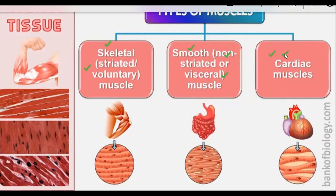Smooth muscles are the involuntary muscles, like the muscles of the eye and pupil. The muscles in our stomach, intestine, and blood vessels are also involuntary muscles. In blood vessels, they control the constriction and relaxation — basically helping to change the diameter of the vessels. These are all involuntary muscles which we cannot control.